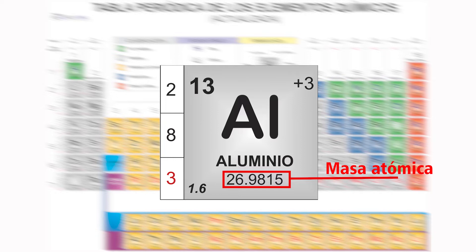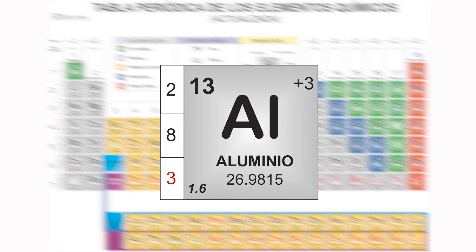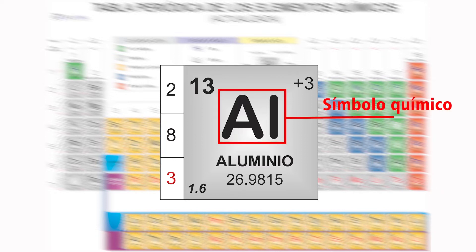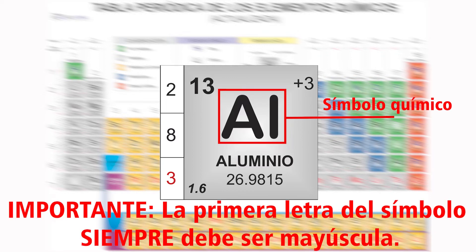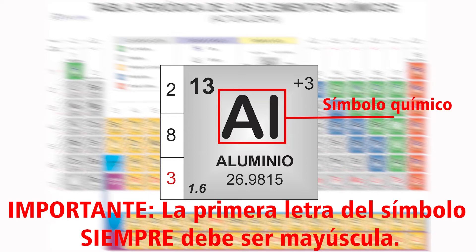Eso ya lo veremos a detalle en la evidencia 3. Bien, ¿qué más vemos aquí? Claro, lo que sobresale es el símbolo químico. Y es simplemente una forma fácil de representar a los elementos. Consta de una o dos letras. La primera siempre debe ser mayúscula. Y la segunda, si la hay, siempre deberá ser minúscula. Siempre. Es una regla fundamental.